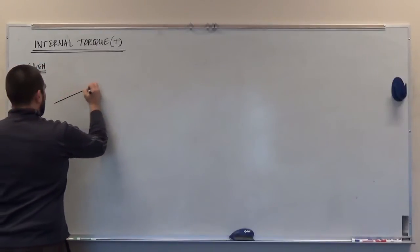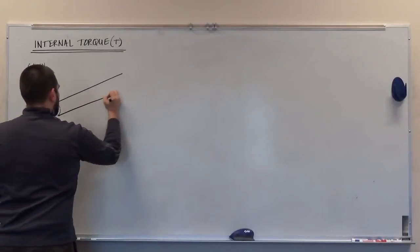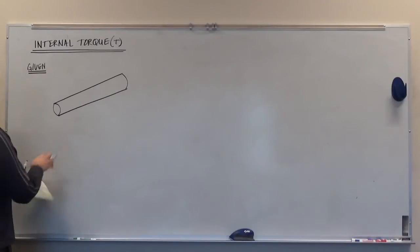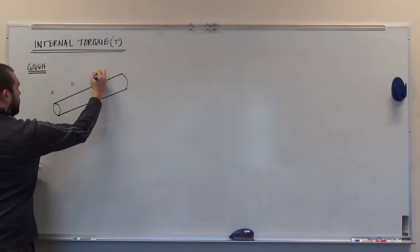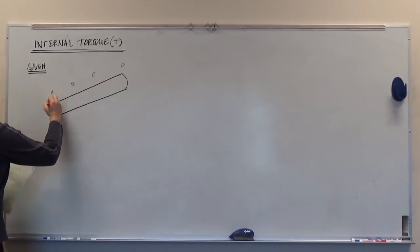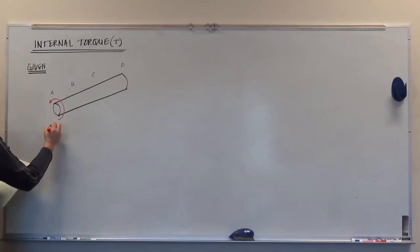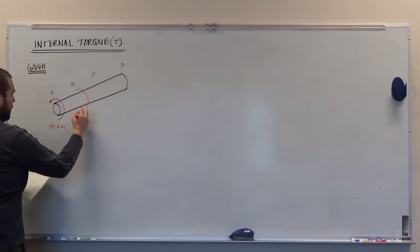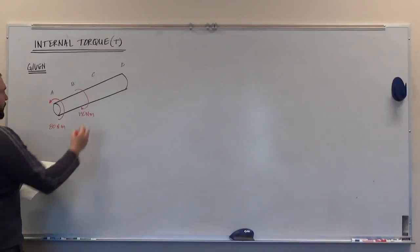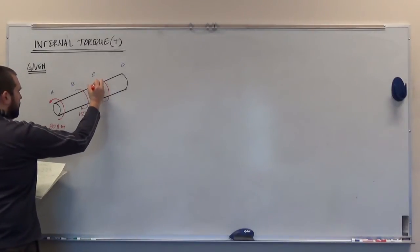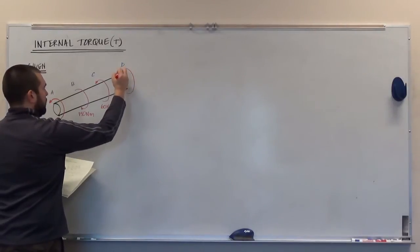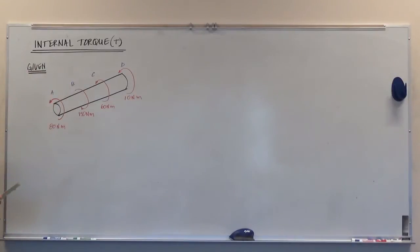We're given an isometric view of a shaft showing the loading on that shaft. We have four different torques applied to it at points A, B, C, and D. At point A we have a moment of 80 Nm; at point B we have a moment in the opposite direction of 150 Nm; at point C it goes back to the original direction with 60 Nm; and at point D, going in the same direction as C, that is 10 Nm. We're simply asked to provide the internal torque diagram.